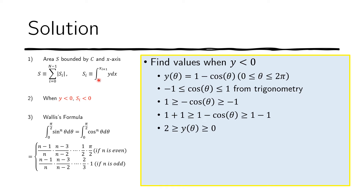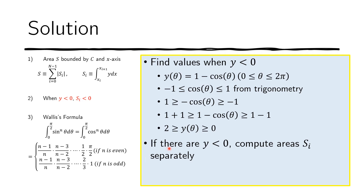Since y ≥ 0 everywhere, we don't have to worry about computing areas separately. The limits run from θ = 0 to θ = 2π. Our integral is from x₀ to x sub n, where x sub 0 corresponds to θ = 0 and x sub n corresponds to θ = 2π.